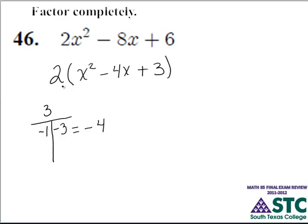Therefore we must take into account this two that we initially had factored out as the GCF, and our factors become two times x minus one times x minus three.